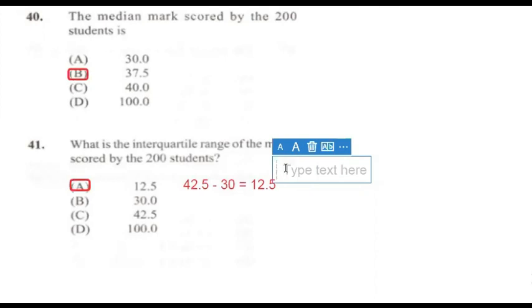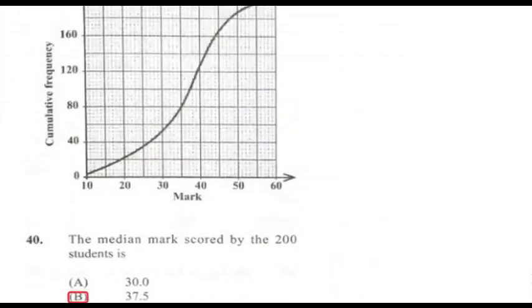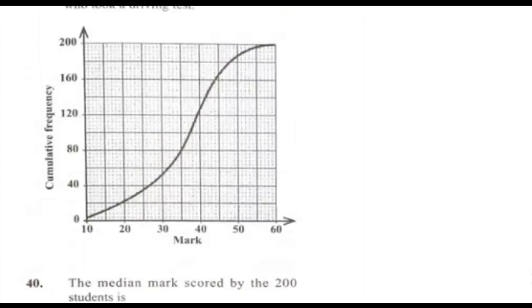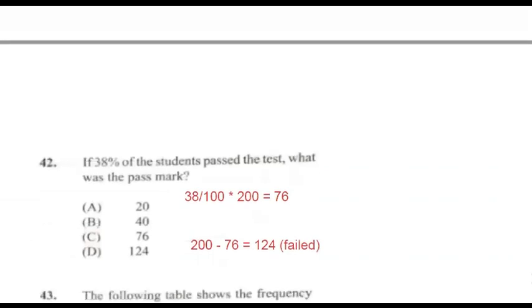Question 41: What is the interquartile range of the marks scored by the 200 students? If you remember from part 2, this was referring to this graph. The interquartile range is the difference between the upper and lower quartiles — the difference between the 75th and 25th percentiles. In this case it would be the difference between 150, which gives us 42.5 marks, and 50, which gives us 30. So the difference between 42.5 and 30 gives us 12.5. Answer for 41 is A.